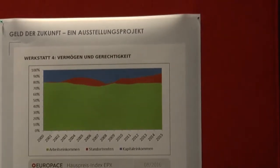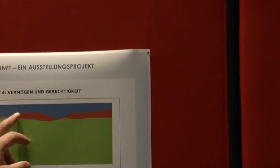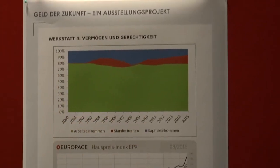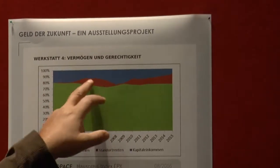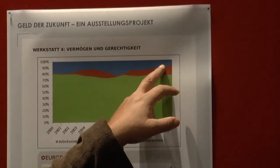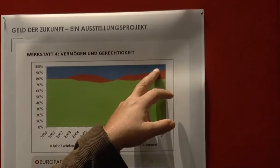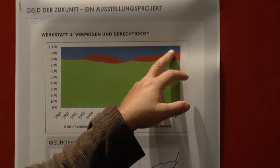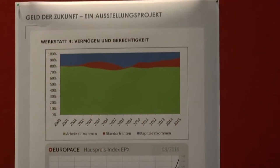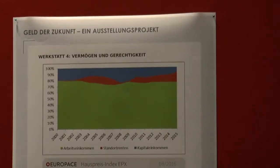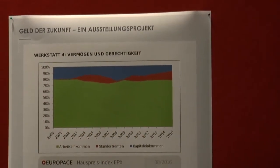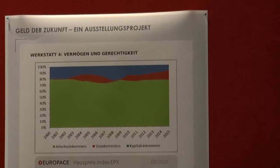Die Banker können ein Lied davon singen. Was ist aber gestiegen? Wir haben drei Produktionsfaktoren: Arbeit, Boden, Kapital. Es muss das Dritte gestiegen sein – letztlich die Erträge, die auf den Boden fallen, nämlich die Bodenrenten. Wer hat also profitiert von der Niedrigzinsphase? Es hat nicht das Kapital profitiert, es hat auch nicht die Arbeit profitiert – es hat letztlich der Boden profitiert. Die Bodenerträge sind gestiegen.